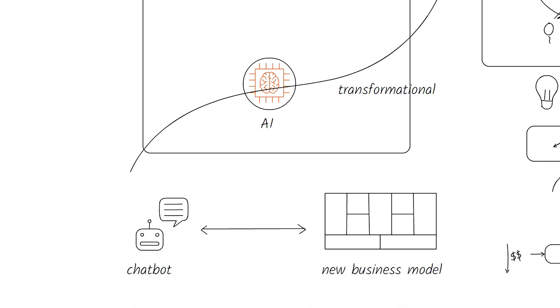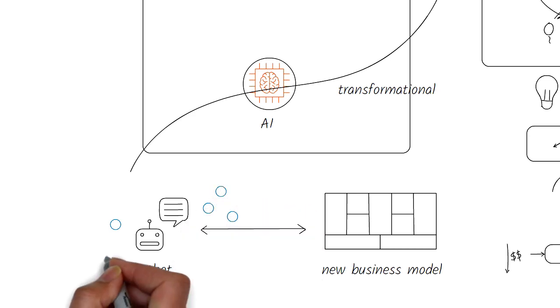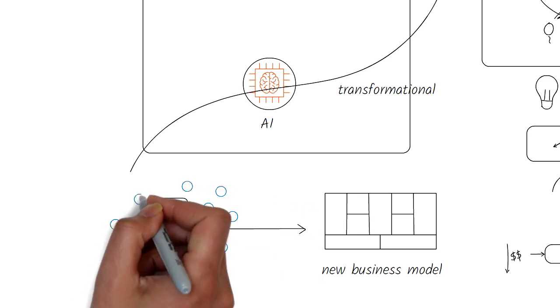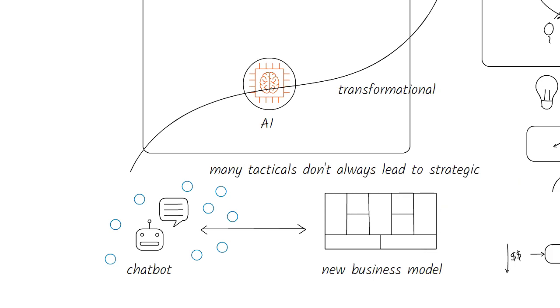The former is tactical and the latter is strategic. Tactical is okay, as long as you know where you're going. A bunch of tactical uses of AI will not necessarily get you the lift or the ROI in the long term if these are done in a haphazard way.